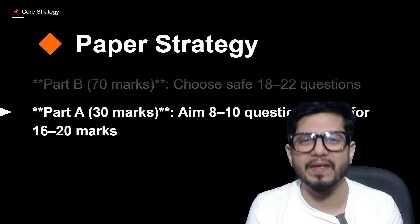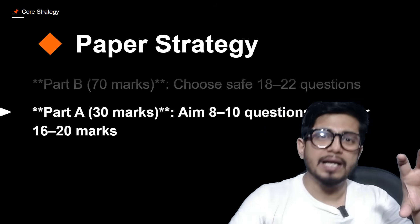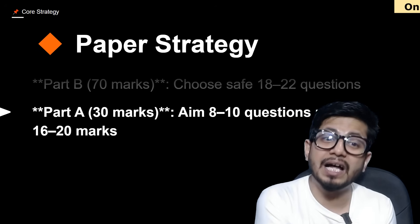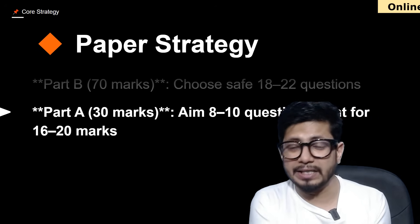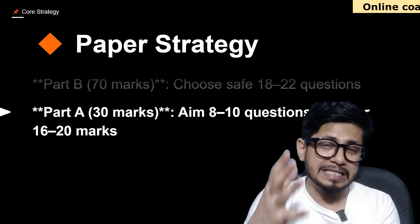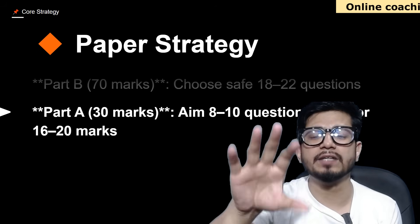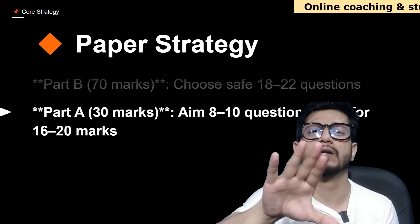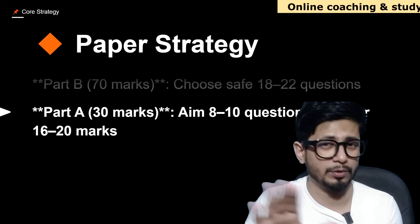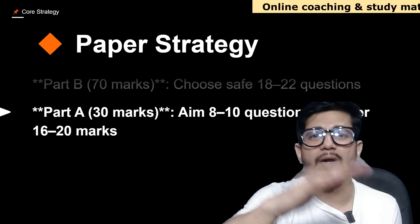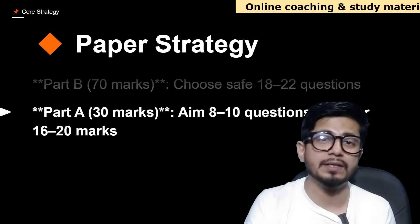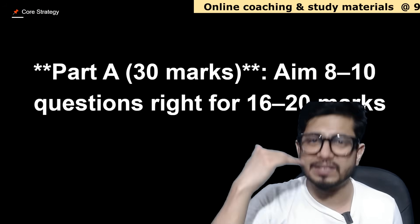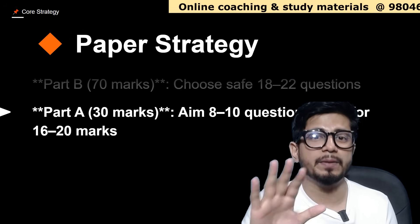If you add these marks together — say 90 in Part C and 30 in Part B — that's 120 already. Then another 15 to 20 from Part A gives you 135 to 140 as your target. If your target is 135 to 140, you will realistically reach 125 to 120. Remember: if you keep your target at 150, you will reach 130. If you keep your target at 130, you will reach 110. So always set your targets high.